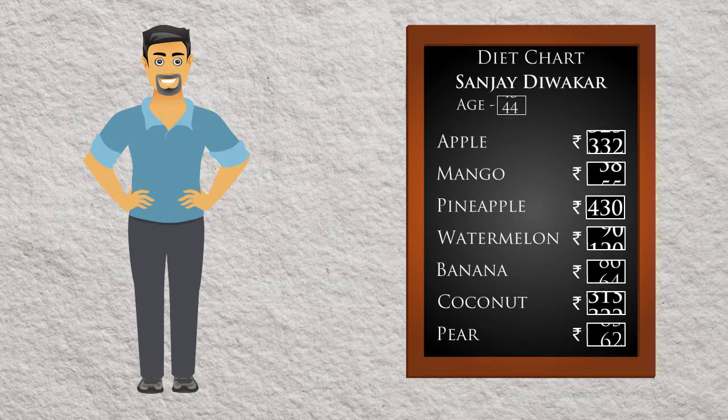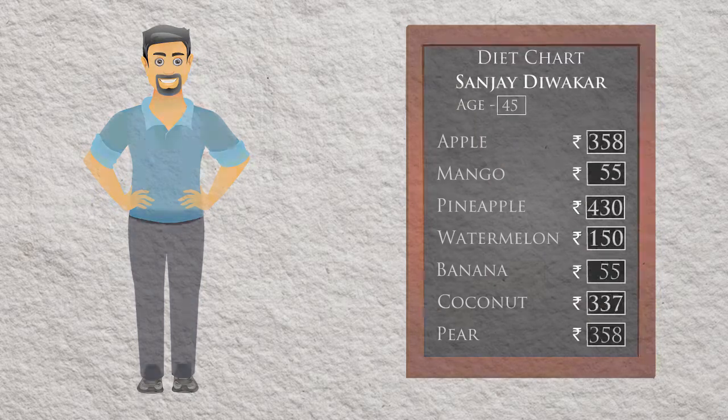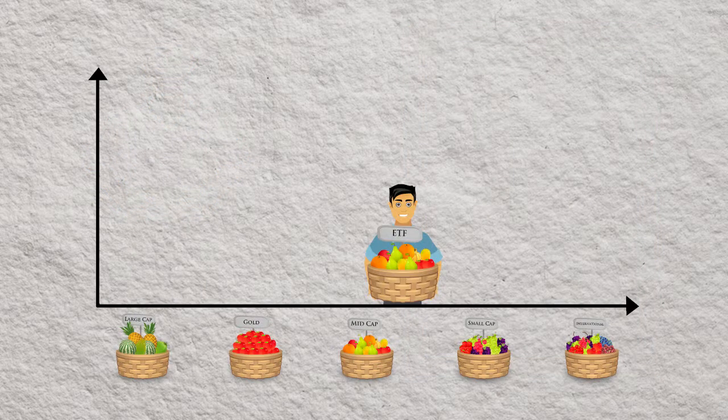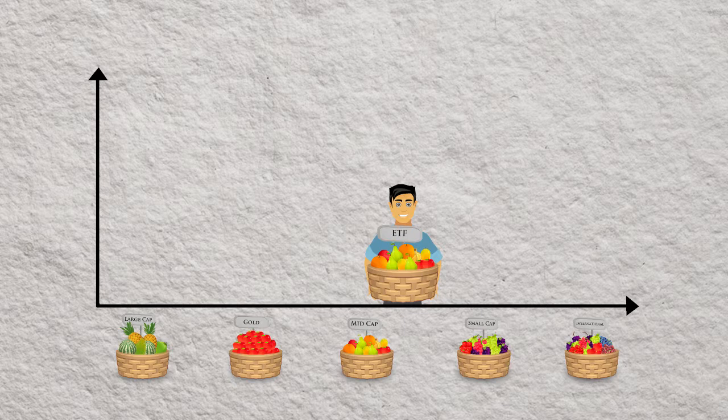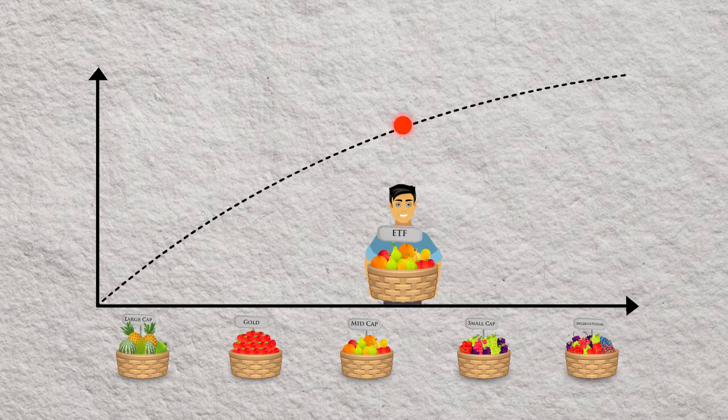When it comes to ETFs, this is done in several parts. Just like there is an optimal fitness level based on your age, there is an optimal risk level based on your current life stage, which may differ from person to person depending on your financial requirements. This is called your risk tolerance.